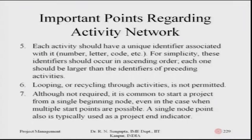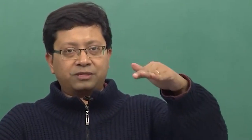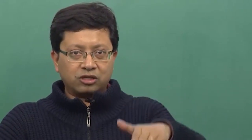Each activity should have a unique identification associated with its numbers or letter code. If the letter code is A, B, C, D they should not be in clash, or if the activities are starting at 1 and 2, other should definitely not clash — 1 and 2 should be unique. For simplicity, this identifier should occur in ascending order; each one should be larger than the identifiers of the preceding activities, so the numbering should go down in a logical sense as we proceed.